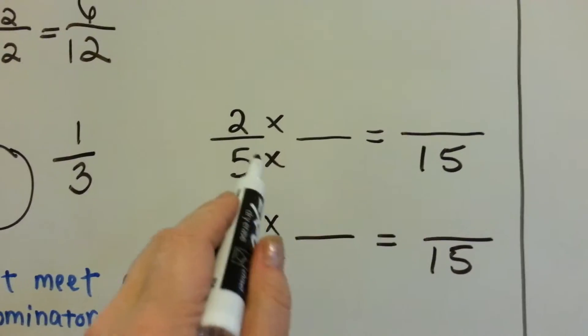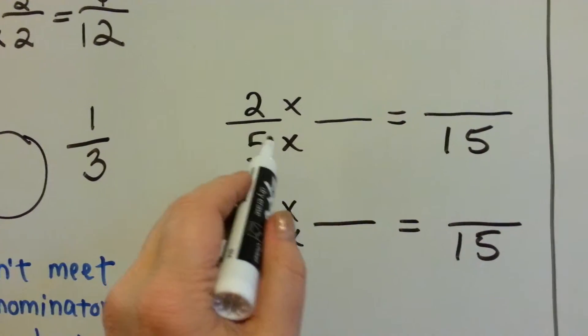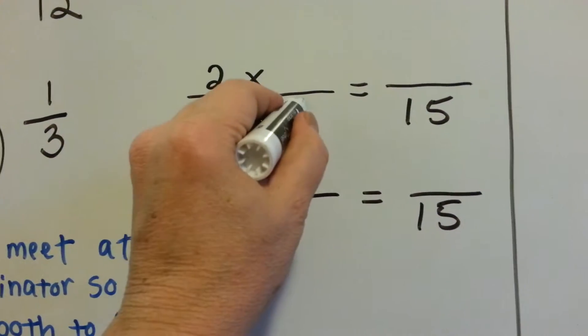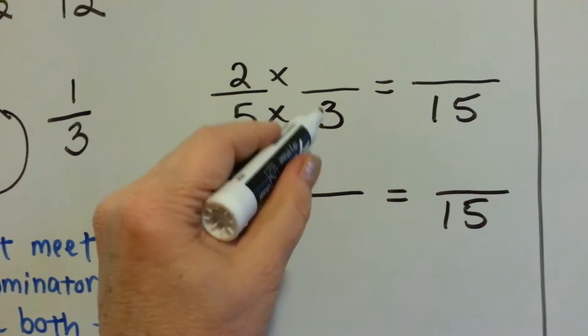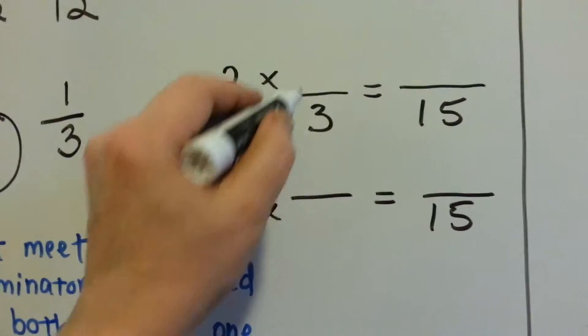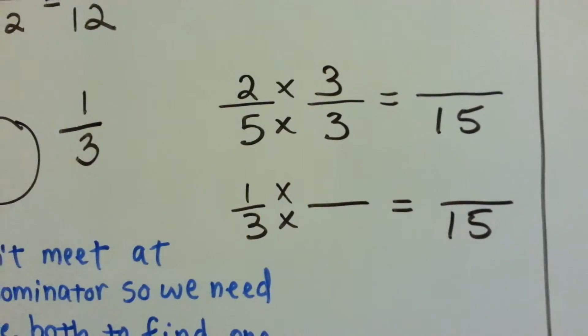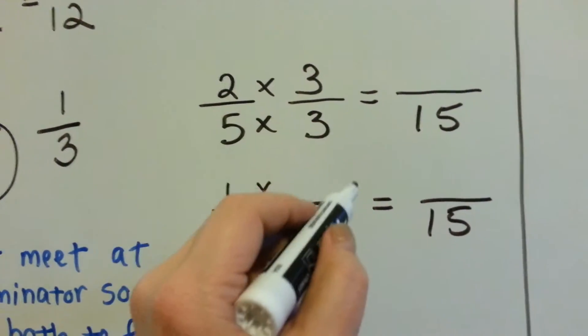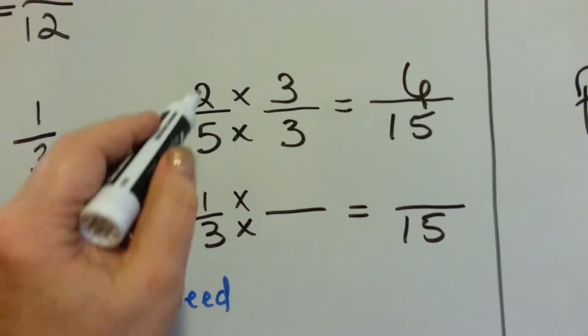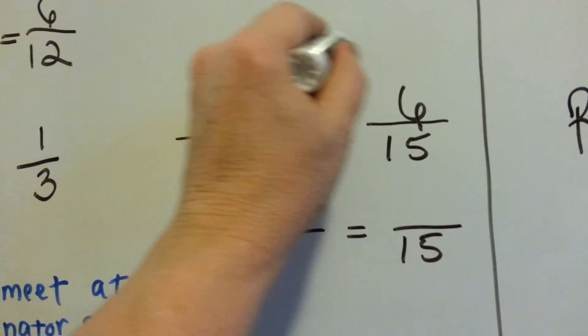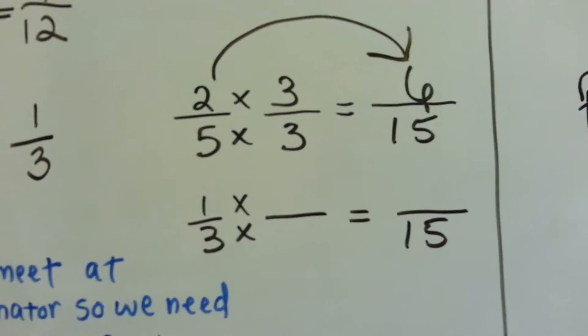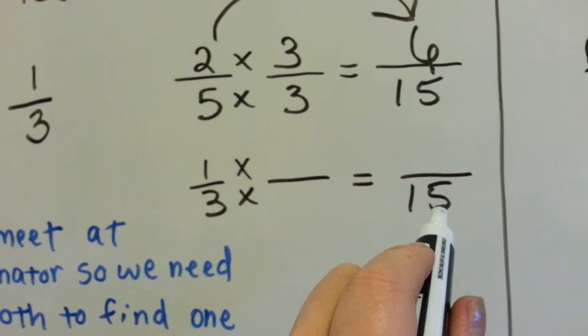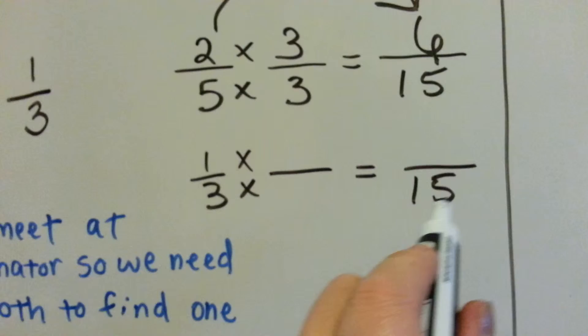So we know the 5 needs to get to the 15. So what times 5 equals 15? 5 times 3. Well, if we're going to multiply the 5 times 3, the 2 gets jealous and he wants to be multiplied by the 3. 5 times 3 is 15. 2 times 3 is 6. So 2 fifths has now become 6 fifteenths. 1 third, the 3 needs to get to 15.